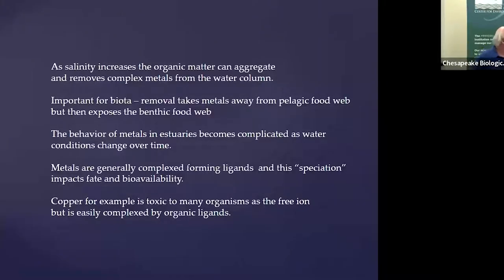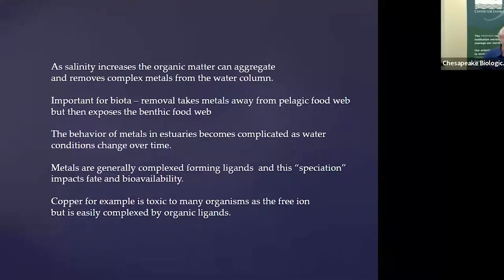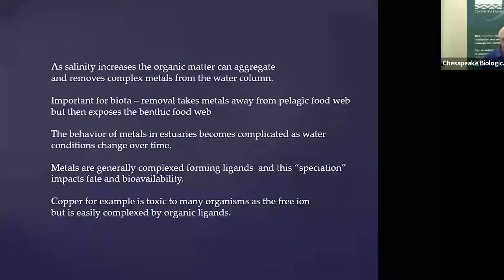As salinity increases, organic matter aggregates and removes complex metals from the water column, which is important for biota. Removal takes metals away from the pelagic food web but then exposes the benthic food web. The behavior of metals is complicated — conditions change over time, and metals are complex because they form ligands. Ligands with organic matter or with sulfide influence what we call speciation, which affects bioavailability. A good example is copper: the most toxic form is the free ion, which diffuses across gill membranes in certain fish. But there's very little of that typically in the environment. If you change the chemistry by removing organic matter, you can increase the availability of copper to fish.